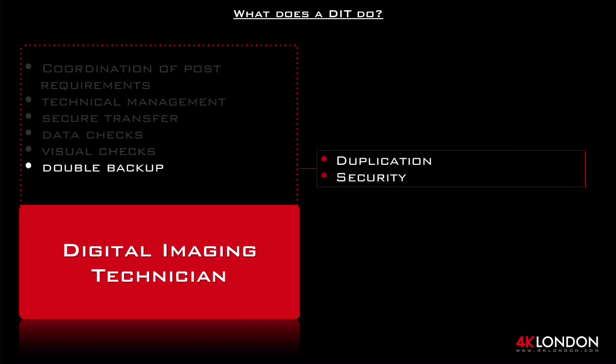Double Backup: we don't treat a single copy as a backup. A minimum of two copies of everything that channels through a DIT is standard.